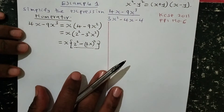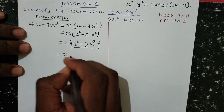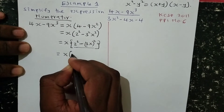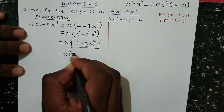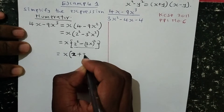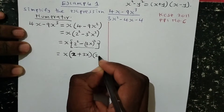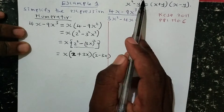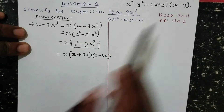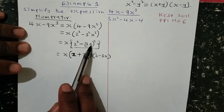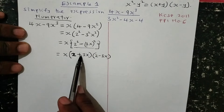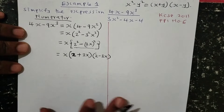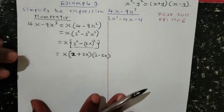I am going to apply this property to break down the numbers within the bracket. So this is the same as x into 2 plus 3x, then multiplied by 2 minus 3x. Just as with x squared minus y squared giving x plus y times x minus y, similarly 2 squared minus 3x squared gives 2 plus 3x, then 2 minus 3x. With the x outside the bracket, that is the simplification of the numerator.